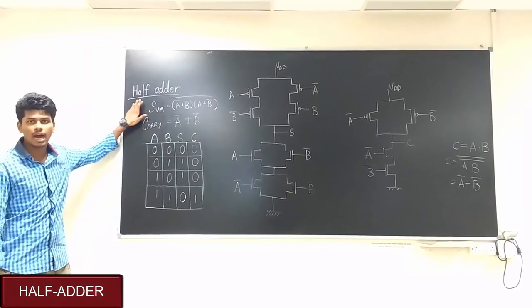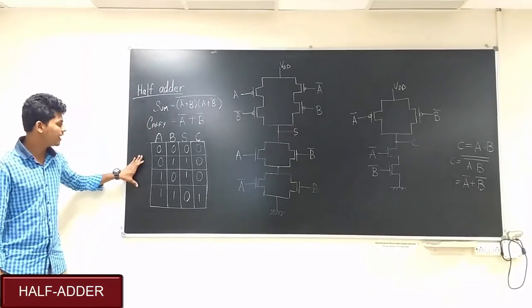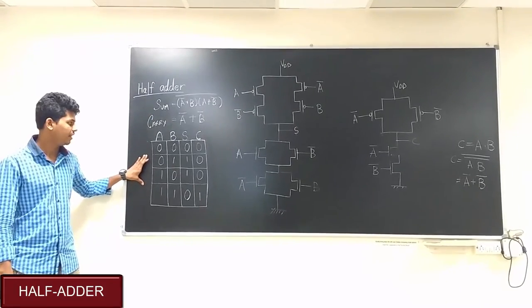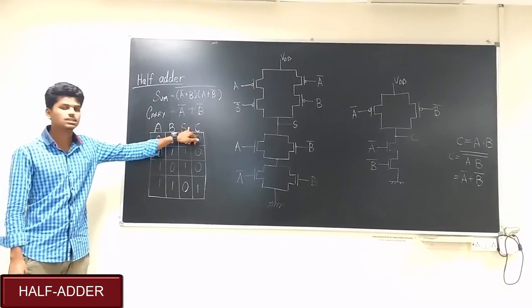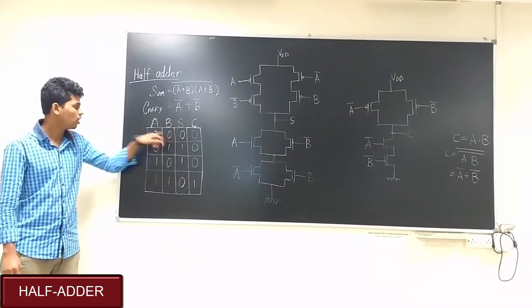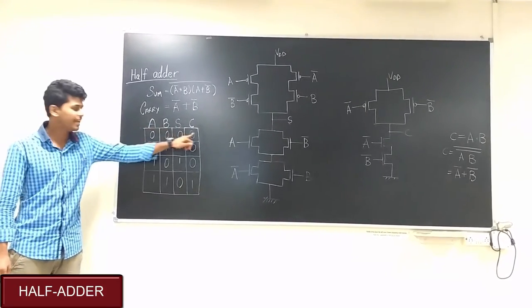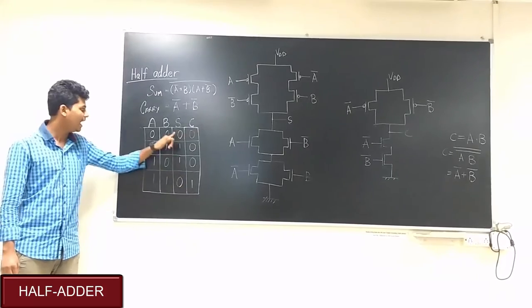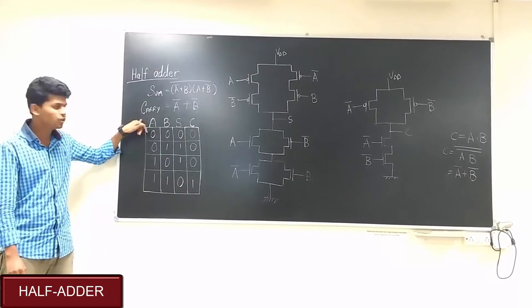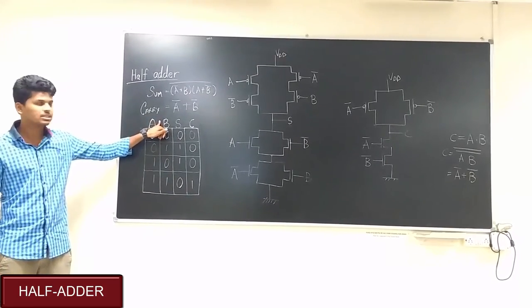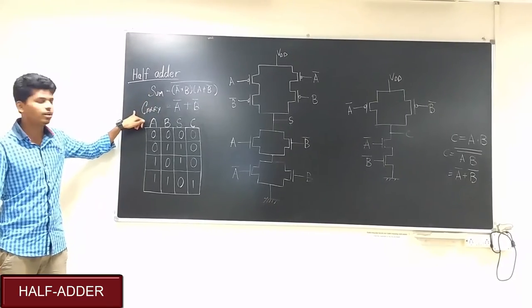Now let's look into the half adder implementation. Here we can look at the lookup table of half adder where sum is nothing but XOR of the inputs A and B, and carry is nothing but AND of the inputs A and B. The equation for sum is this and the equation for carry is this.